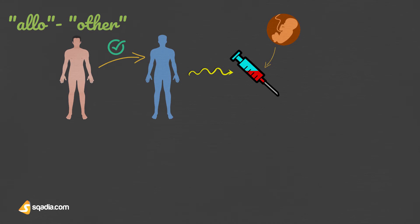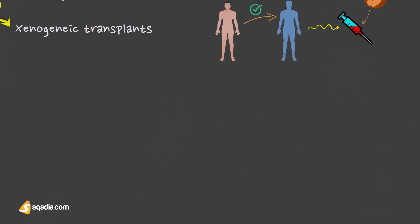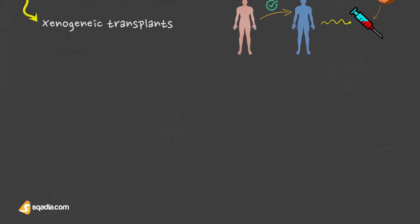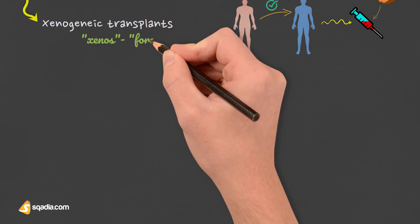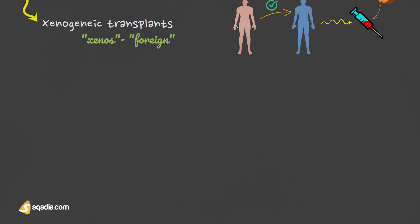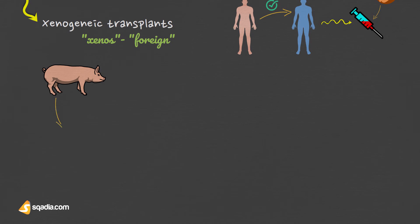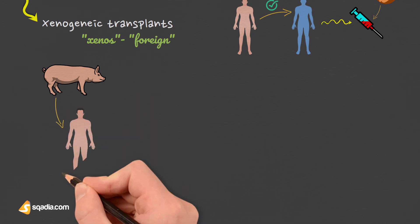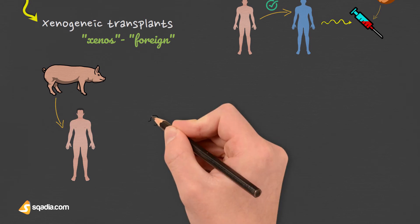On the fourth spot we have xenogenic transplants or heterografts. Xenos comes from the Greek word meaning foreign or strange. It is described as a transfer between animals of different species, for example from pigs to humans. It is also called xenotransplantation. The limited supply of donor organs is still a primary problem in all transplantations.